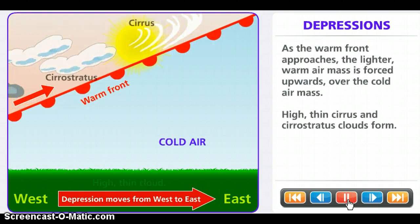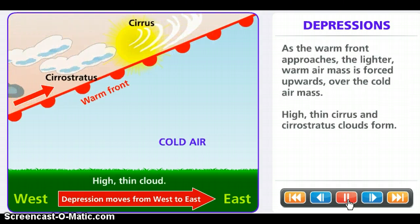As the warm front approaches, the lighter, warm air mass is forced upwards over the cold air mass. High, thin, cirrus and cirrostratus clouds form.